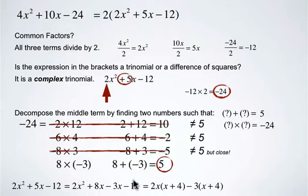And the second two terms, negative 3 is common to both negative 3x and negative 12. And when we factor it, it's negative 3 times x plus 4.